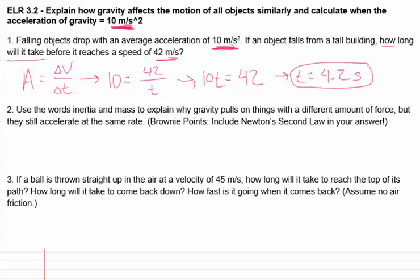For number two, using the words inertia and mass to explain why gravity pulls on things with a different amount of force, but they still accelerate at the same rate, I'm actually going to use words and pictures to describe this concept. And I will also take advantage of the Brownie points and use Newton's second law as well. So I'm going to start with the idea of like, let's say you have a really little ball and a much bigger ball, and they're both at rest and you're going to drop them. So this much smaller ball, since it's an object at rest, it has very little inertia. So since it has so little inertia, it only needs a little force.